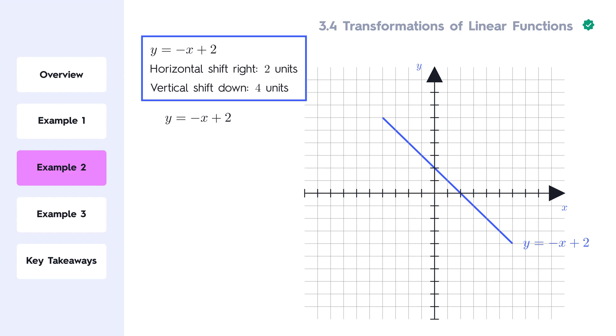Remember, a horizontal shift changes the x variable, while a vertical shift changes the output of the function. Let's go step by step.